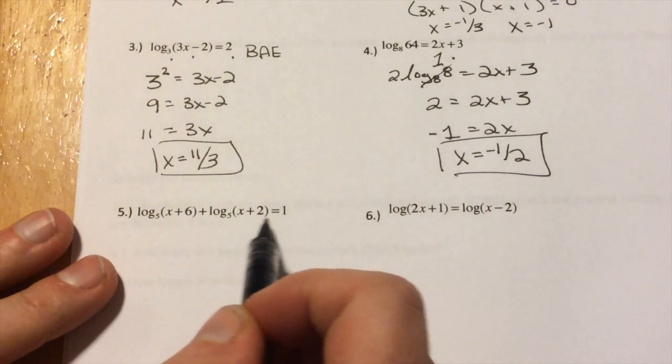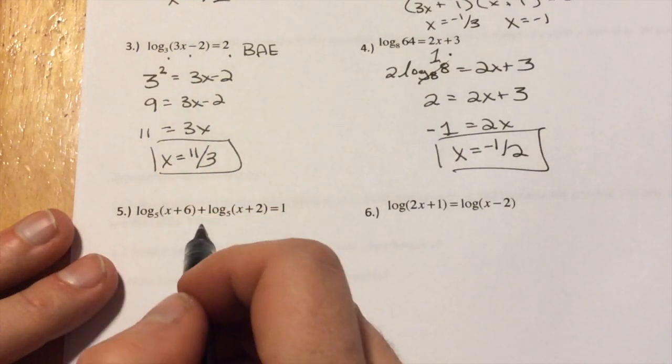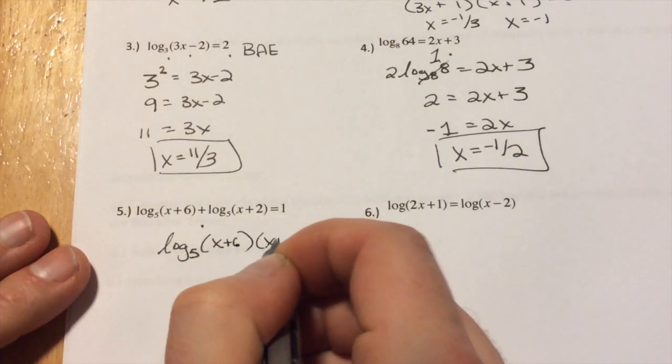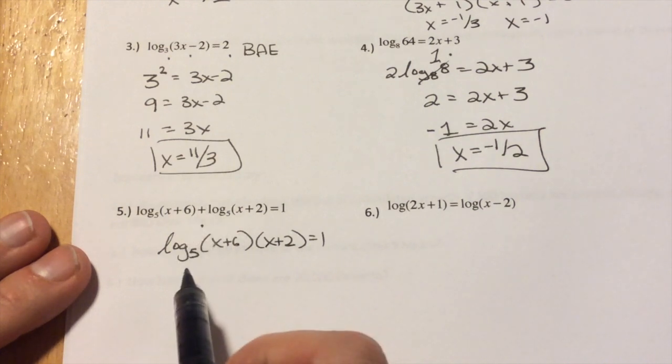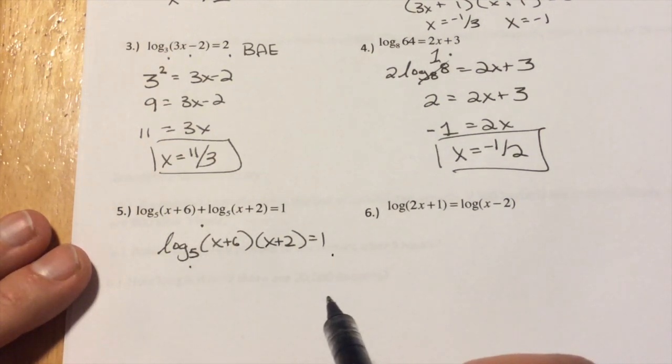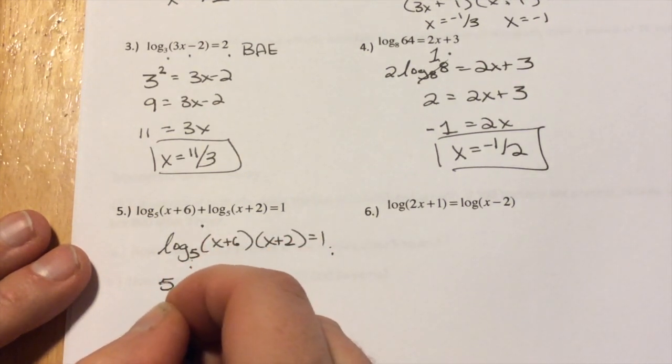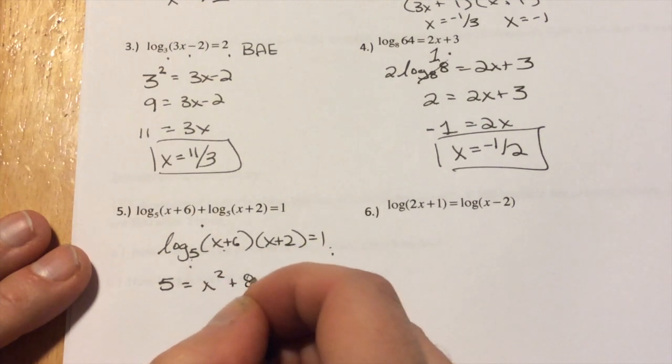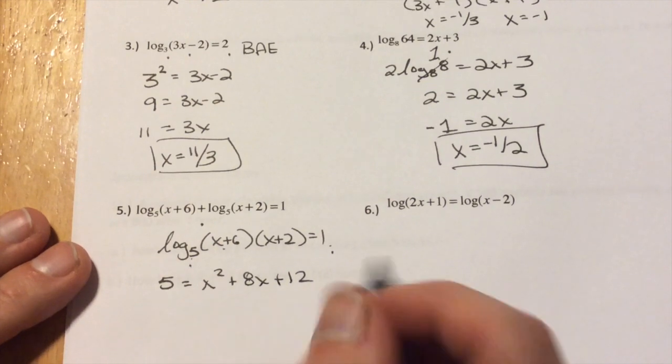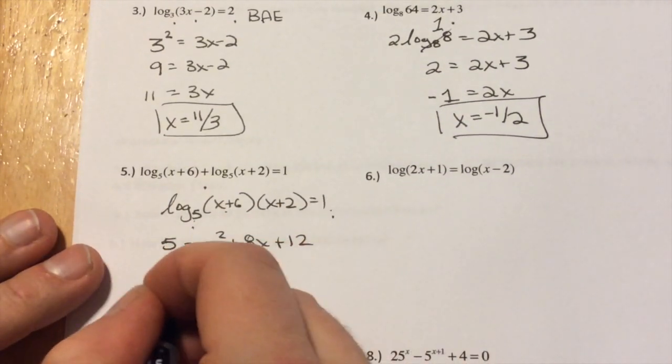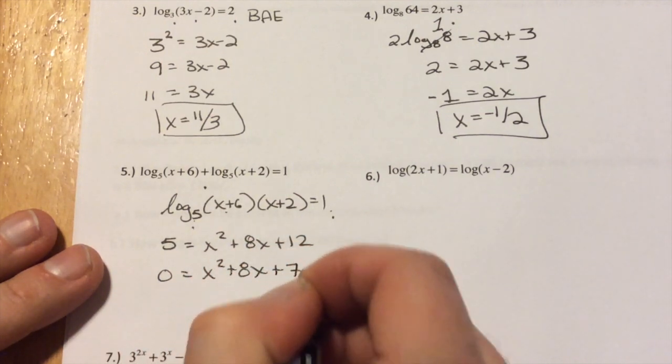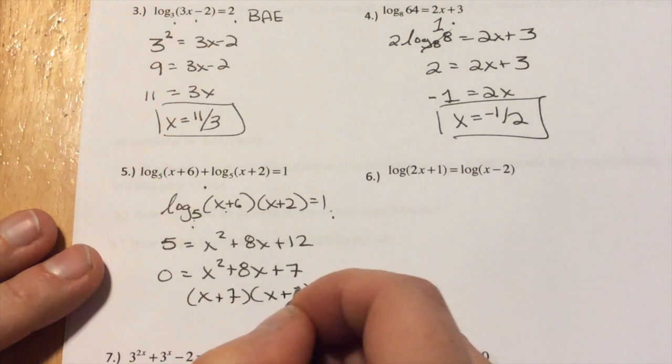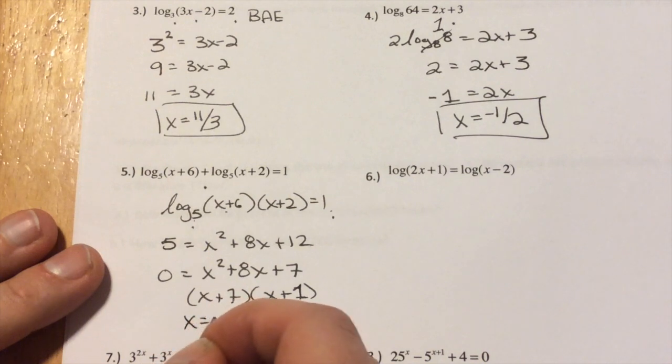Next up, we have 2 logs over here. We're adding them, and they're equal to 1. So, first we want to simplify. Addition turns into multiplication. So we write log base 5 of x plus 6 times x plus 2 equals 1. Next, we see we have a log over here and a number on the other side, so I want to change that to exponential. So that's going to be 5 to the first, 5 to the first is 5, equals this quantity. So I'm going to FOIL that out. x squared plus 8x plus 12.